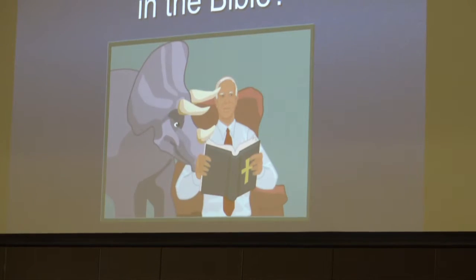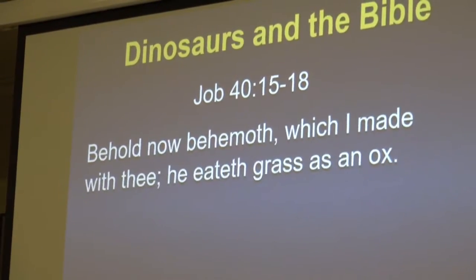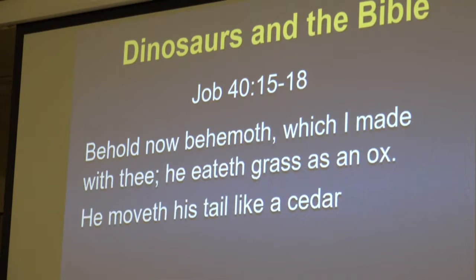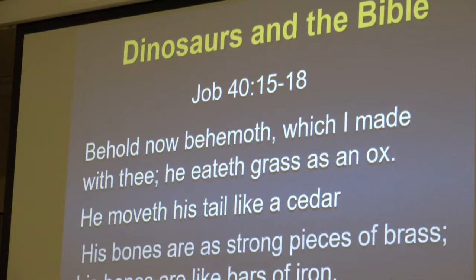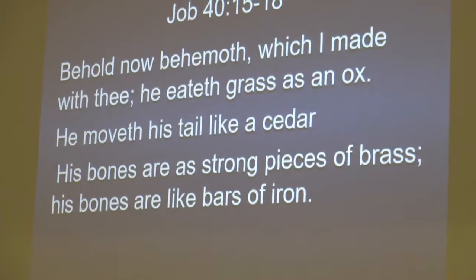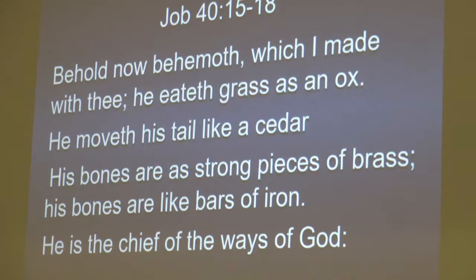Are dinosaurs mentioned in the Bible? Let's go to Job chapter 40, verses 15 through 18. 'Behold now behemoth, which eats grass like an ox' — so it's a plant eater, not an alligator. 'He moves his tail like a cedar' — a cedar is a big tree. This is a plant eater with a big tail. It has bones as strong as pieces of brass, bones like bars of iron. We've got something with a big tail, a plant eater, big bones — and God says he is the chief of the ways of God, possibly one of the largest creatures God created.